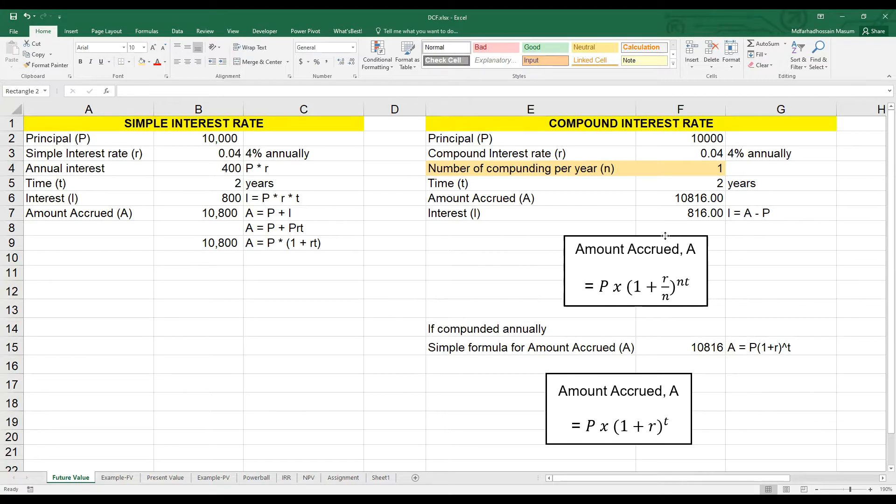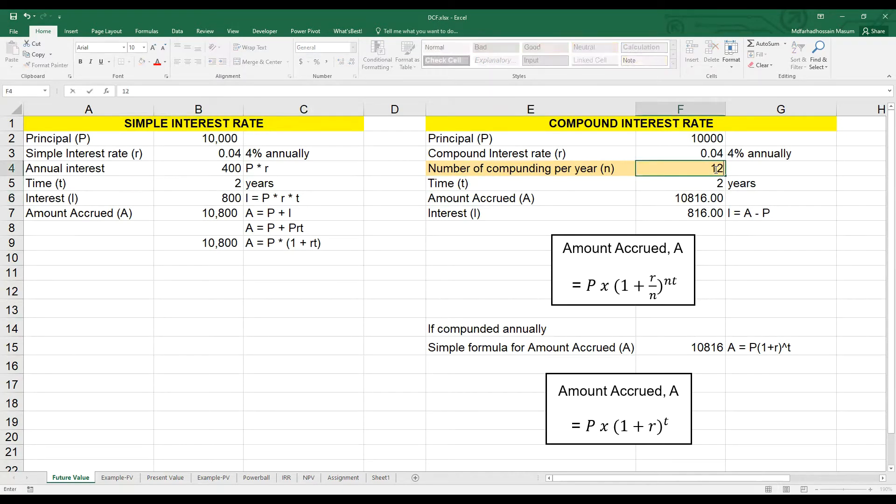P multiplied by 1 plus R over N to the power N multiplied by T. And we see that we actually get about $16 more with compound interest. If money grows every month, then simply change N to 12. Now we get $831 more.